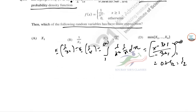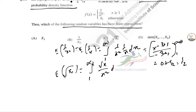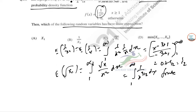Next, E[√X₁] = ∫₁^∞ √x · (1/x²) dx = ∫₁^∞ x⁻³/² dx, which is a finite integral since the power 3/2 > 1. So this expectation is also finite.